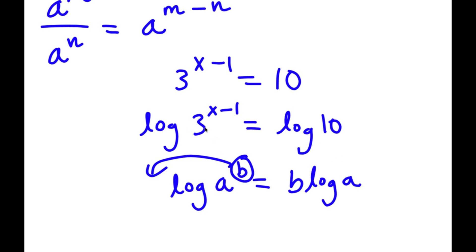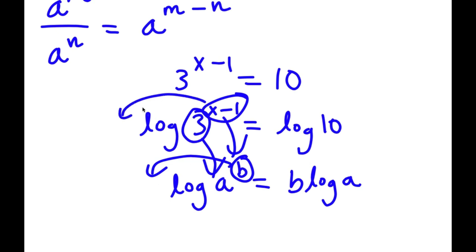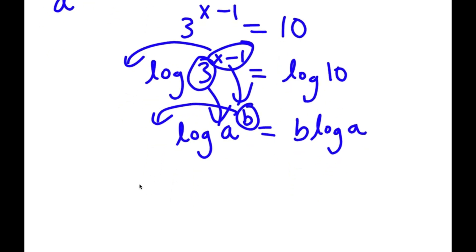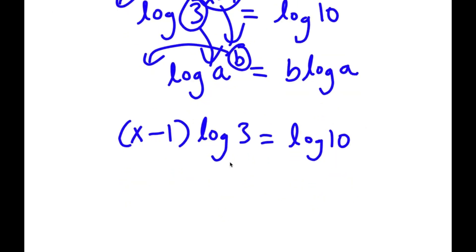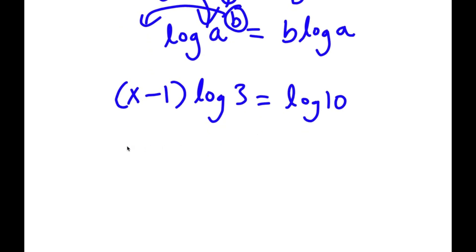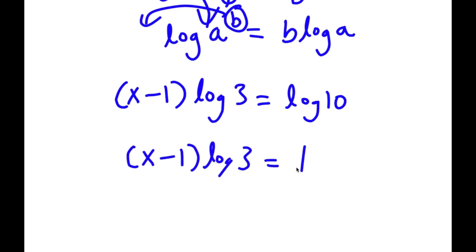So in this case, I have log 3 to the power of x minus 1, and we can think of 3 as a and x minus 1 as b. Moving b to the front gives x minus 1 times log 3 is equal to log 10. And log 10 is the same thing as 1, so now I have x minus 1 times log 3 is equal to 1.